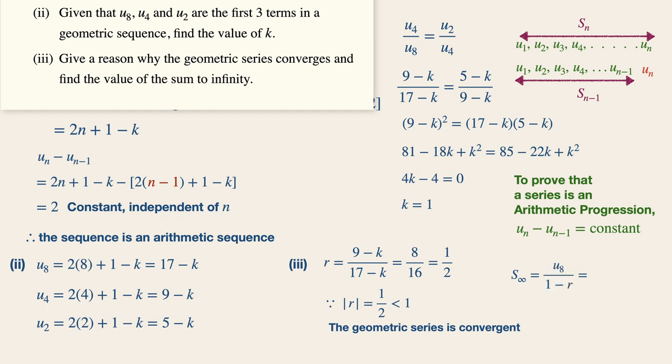Thus, the sum to infinity is denoted by u8, which is the first term, over 1 minus r, which is equals to 16 over 1 minus half, giving us a value of 32.